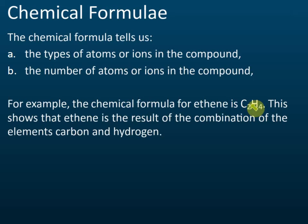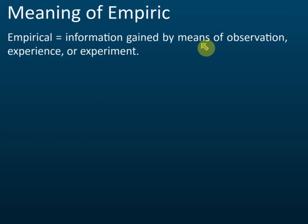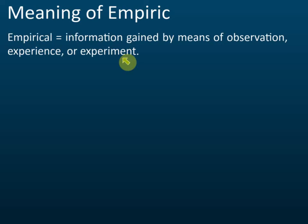That is the function of a chemical formula — it gives us a lot of information about the molecule. Now, there are two types of formula: the empirical formula and the molecular formula. Before we define empirical formula, we need to understand the word 'empirical.' Empirical means information gained by means of observation, experience, or experiment — knowledge that we get from experiment.